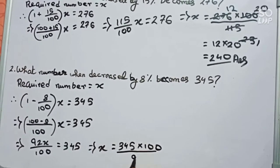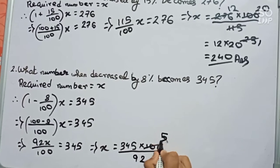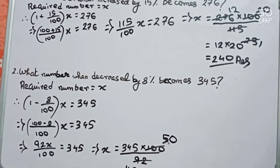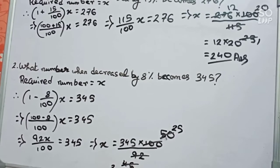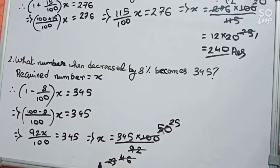X equals to 345 times 100 divided by 92. First you cut 92 and 100 by 2, 50 and 46. Again 25 and 23. Now you can cut 23 and 345 directly, it will become 15.